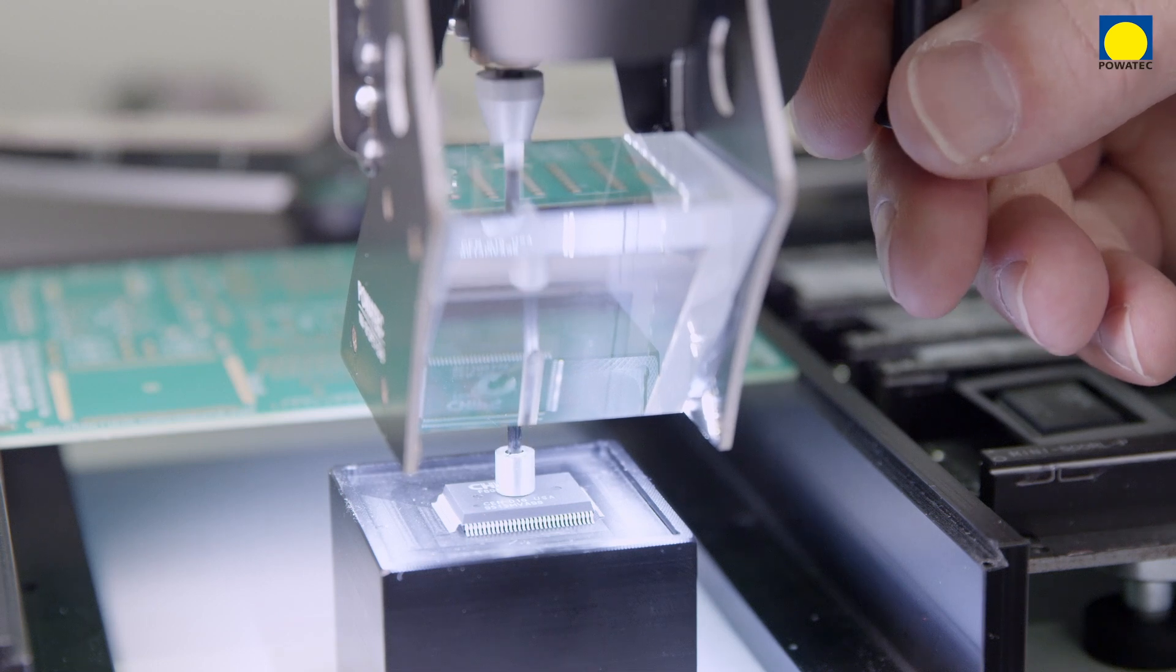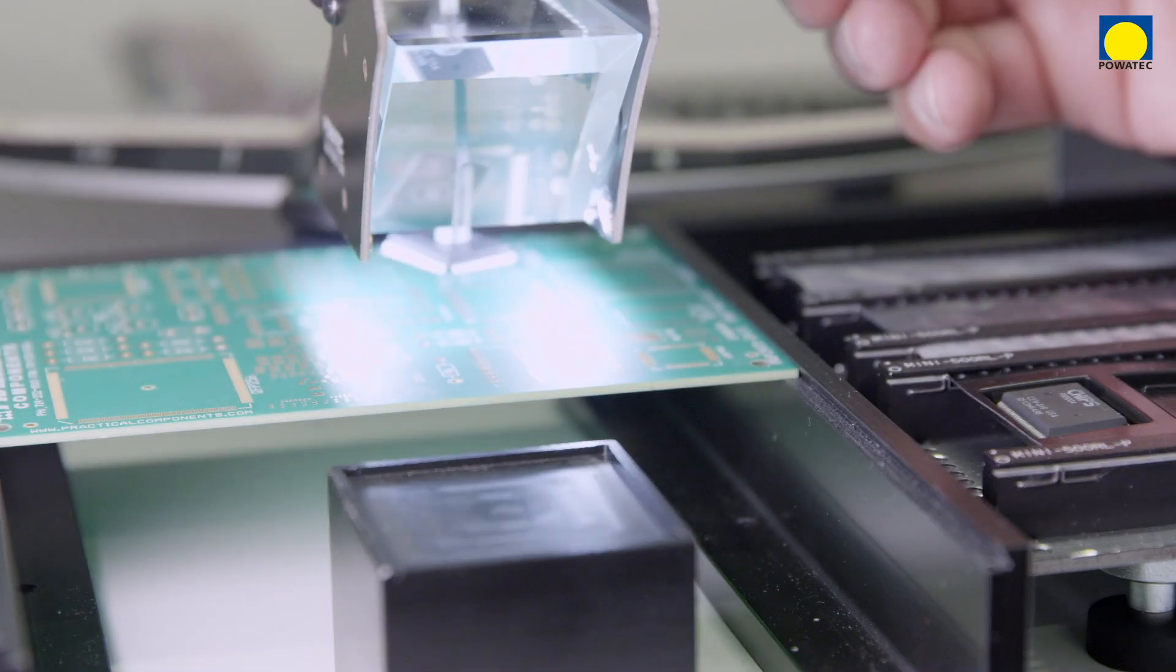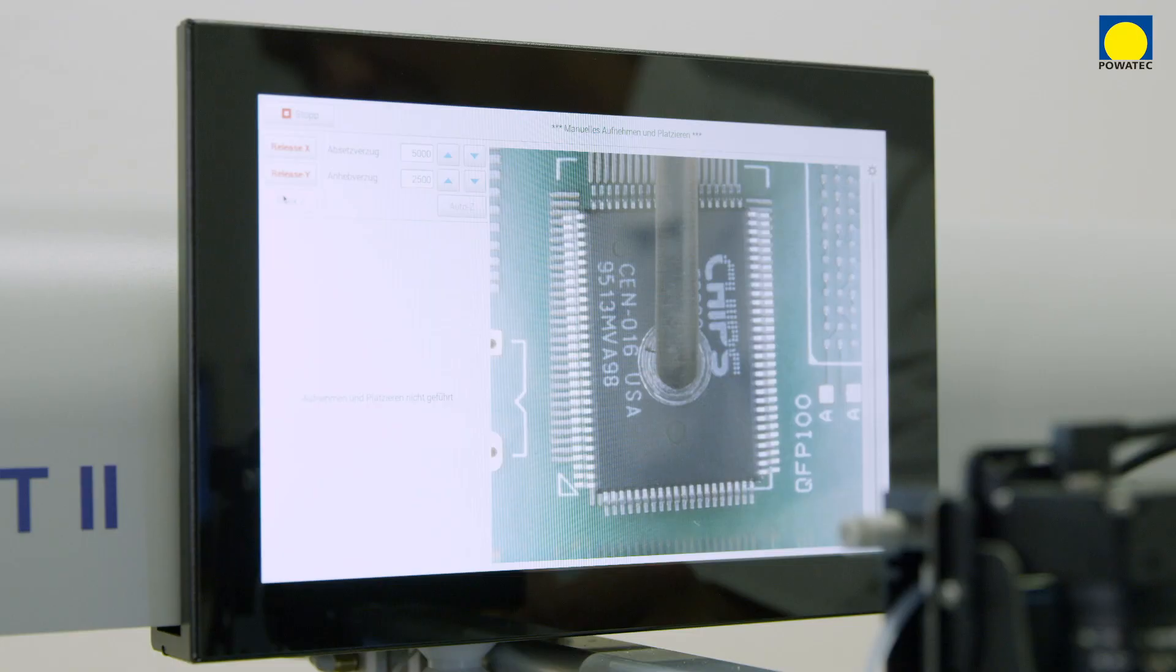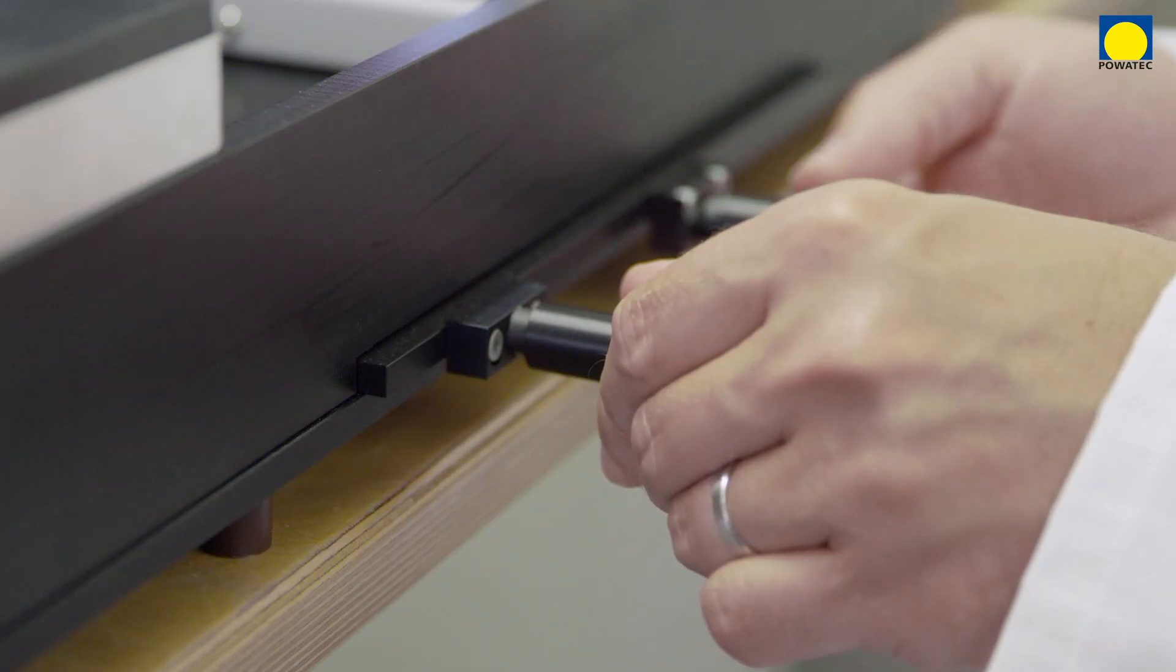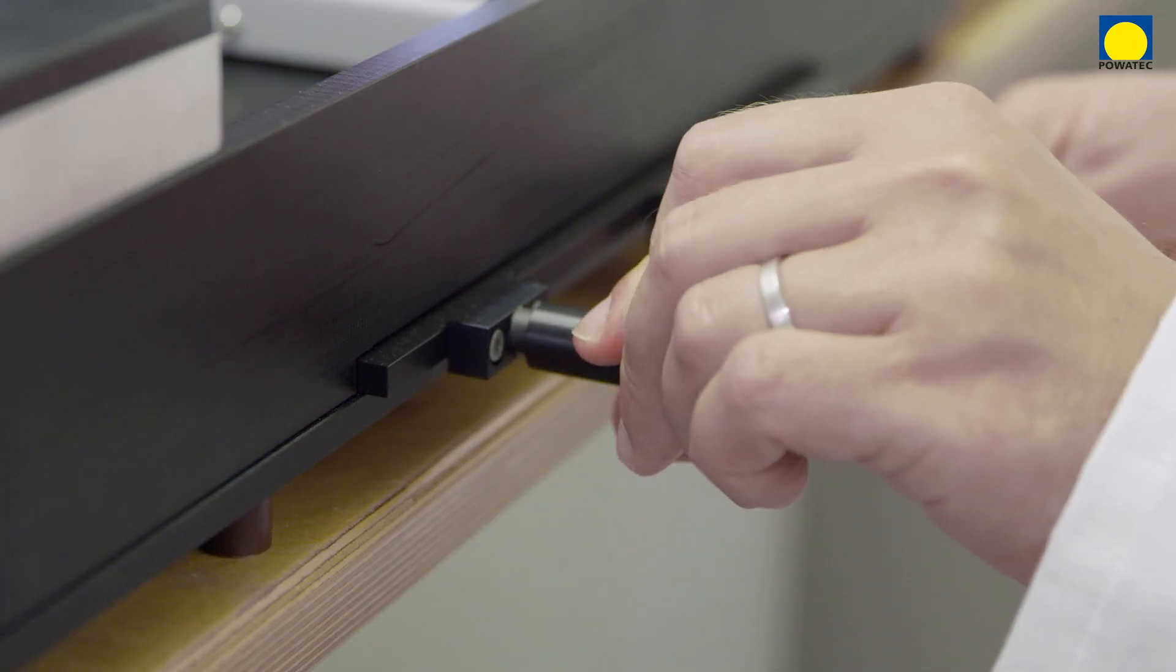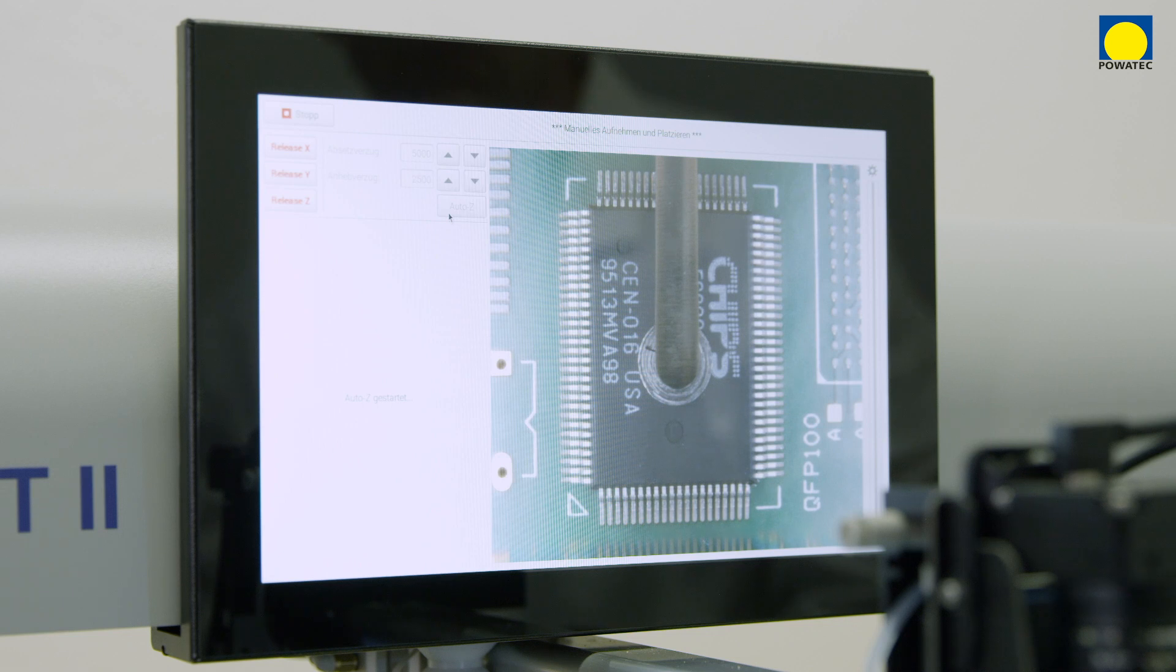For components whose connections are visible from above and where pitch distances are small, use of the optional glass prism is recommended. The component can thus be viewed parallax free from above and precisely aligned. The LED lighting integrated in the prism also makes this work easier.